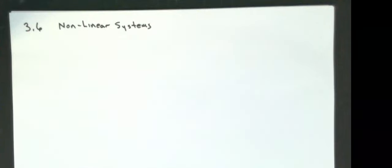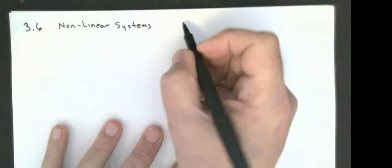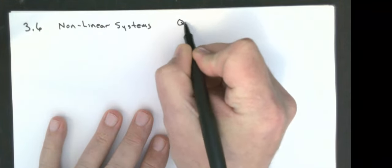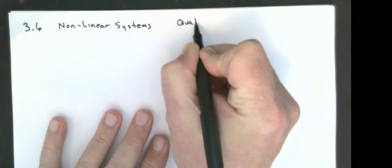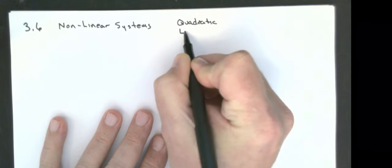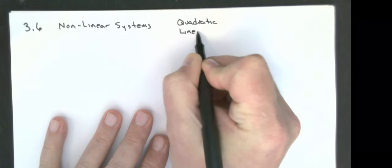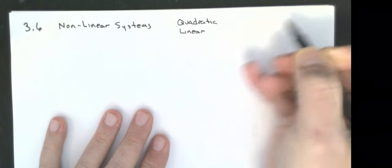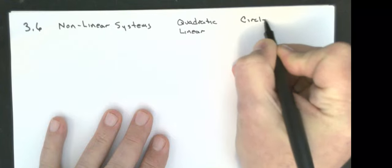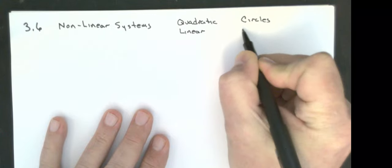Section 3.6 — we're going to talk about nonlinear systems. The ones we're going to talk about specifically are quadratic with a linear, and circles with a linear.